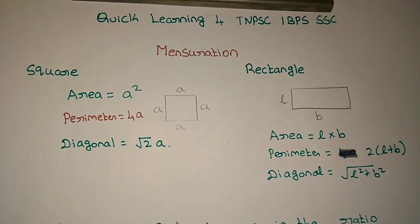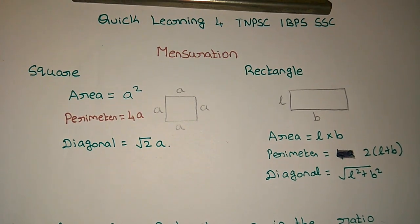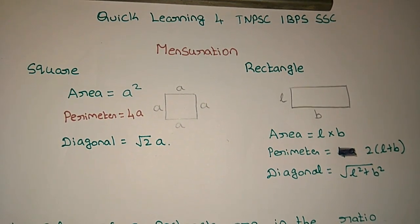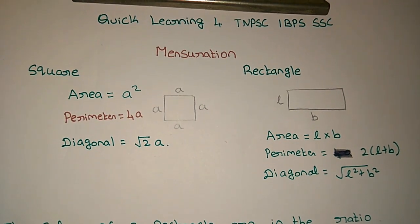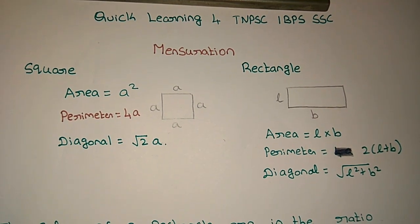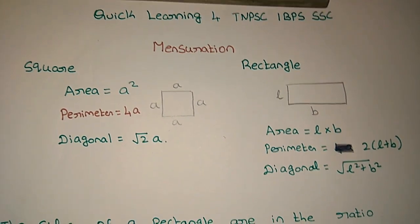The shapes we will cover are: Square, Rectangle, Triangle, Parallelogram, Rhombus, Prism, Sphere, and Hemisphere. We will go through the basics and pull out all the steps.